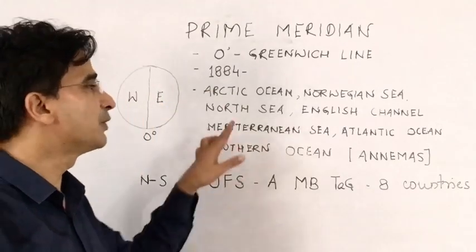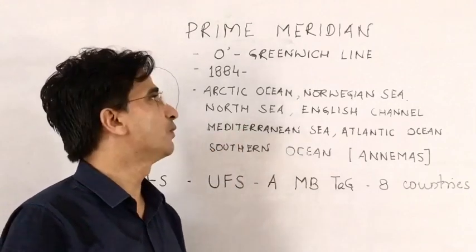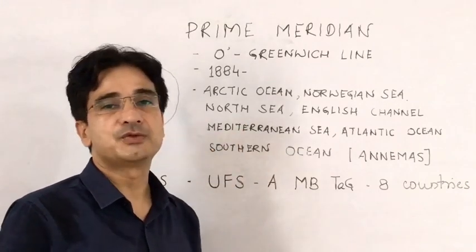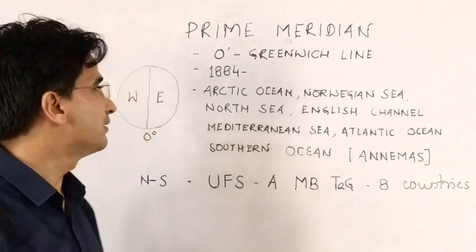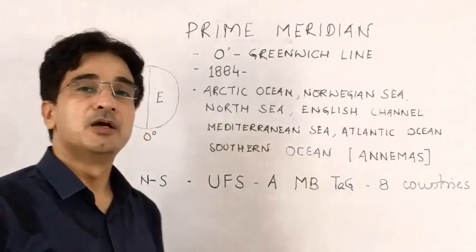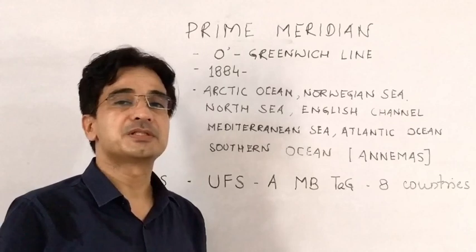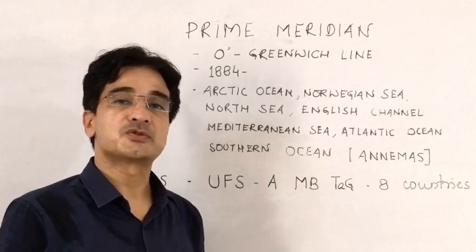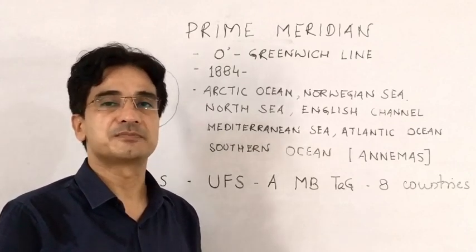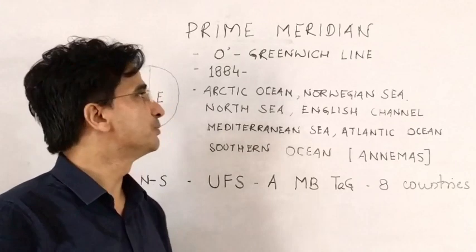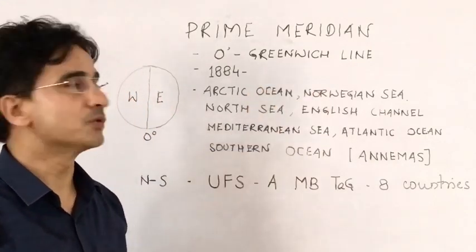There were two reasons for selecting this. First was that the US had already decided to use it as their standard time zone, and second was that 92% of the commerce of the 19th century was dependent on sea charts, and most of them used Greenwich as their standard time zone.